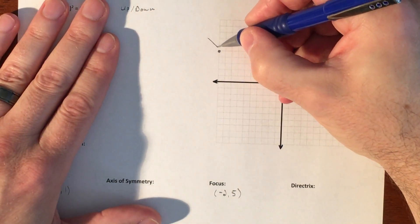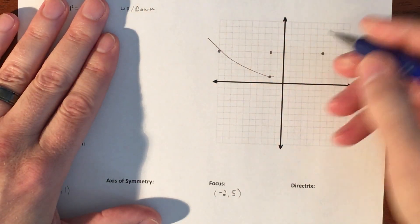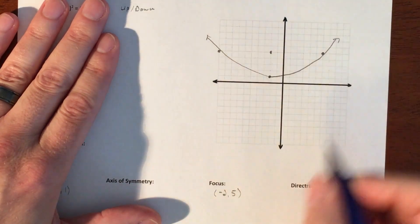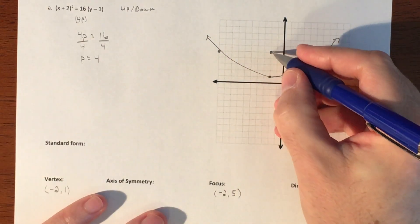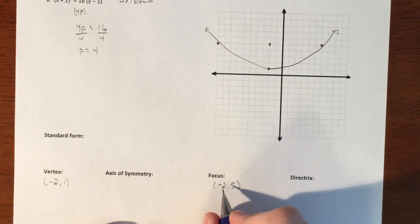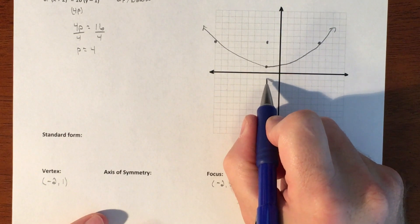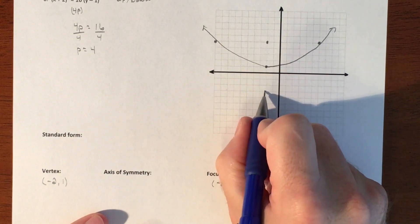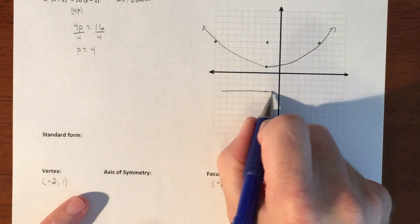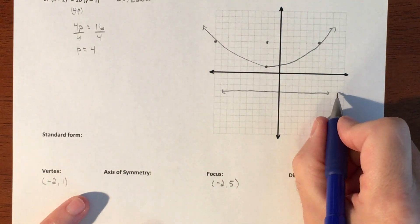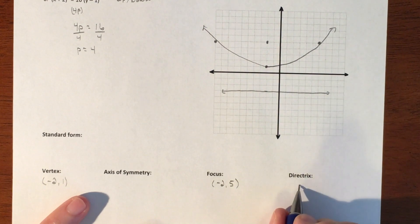We have our focal point which we already wrote. Our directrix is going to be in the other direction, one, two, three, four. So it's going to be right there and the equation for that is y equals negative three.